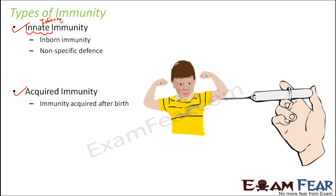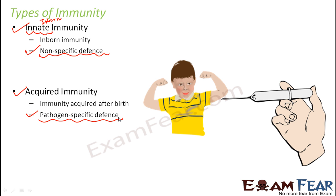Innate immunity is a non-specific defense — it is not against a specific pathogen but provides general protection against all sorts of foreign organisms. Acquired immunity, however, is pathogen-specific. For example, if your body has acquired immunity against Salmonella typhi, typhoid will not happen, but that immunity cannot also fight the viruses that cause common cold. Acquired immunity is always against a specific pathogen.